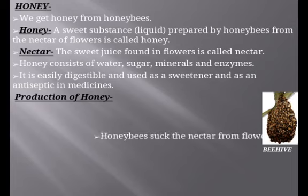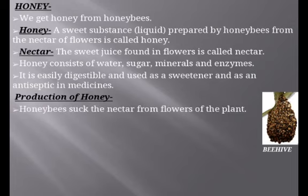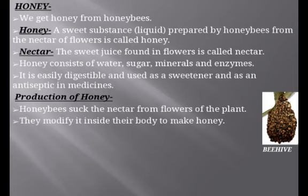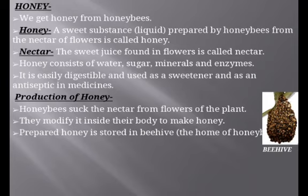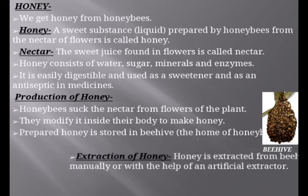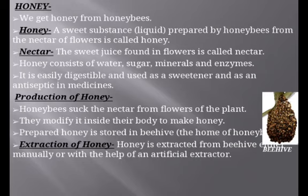How is honey produced? Honey bees suck the nectar from flowers and modify it inside their body to make it into honey form. Nectar is changed into honey in the body of the honey bees. This prepared honey is then stored in the beehive — the home of honey bees. Honey is extracted from the beehive either manually or with the help of an artificial extractor.